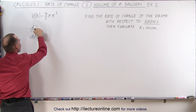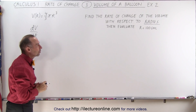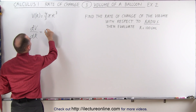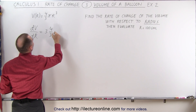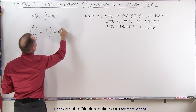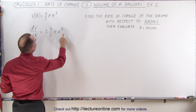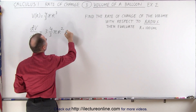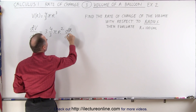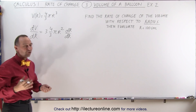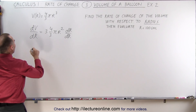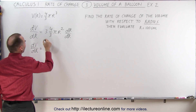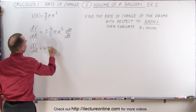We're looking for the derivative, but now with respect to r instead of with respect to time. So taking this equation, this would be equal to 3 times 4/3 pi r to the exponent one less, which is squared, times dr/dr. Since it's dr/dr, we simply don't write that — we can assume that's equal to 1. So we can say that dV/dr, the rate of change of the volume with respect to the radius, is equal to 4 pi r squared.